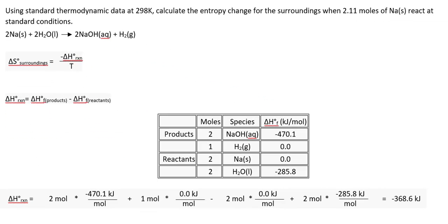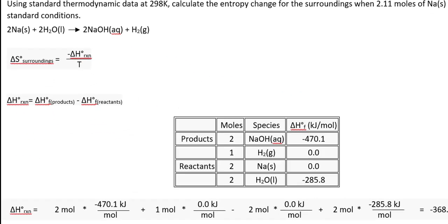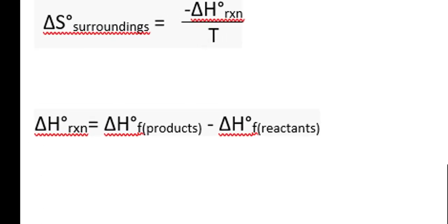So first, let's figure out what delta H reaction is. We're going to use an equation from Gen Chem 1: delta H reaction equals the delta H of the products minus the delta H formation of the reactants.